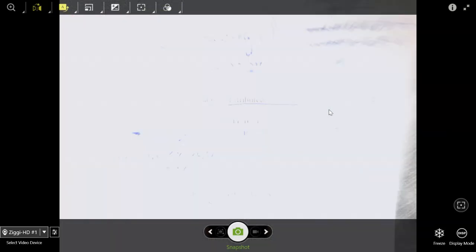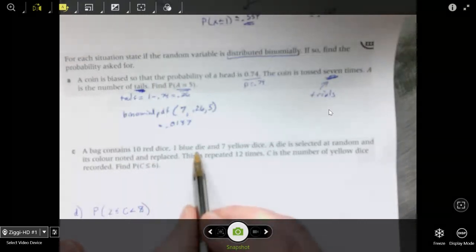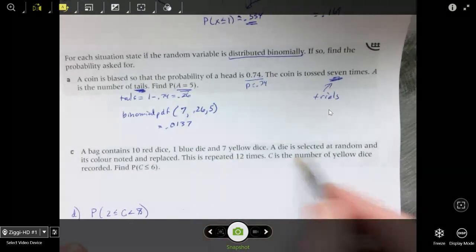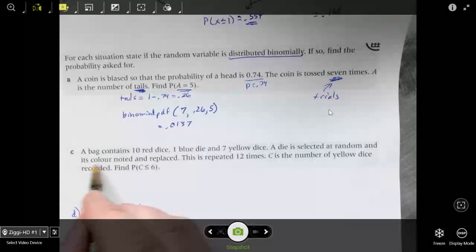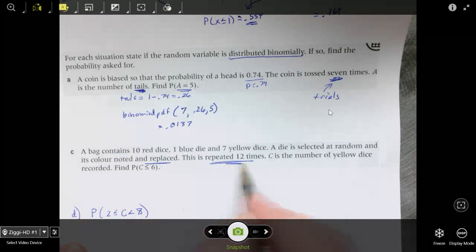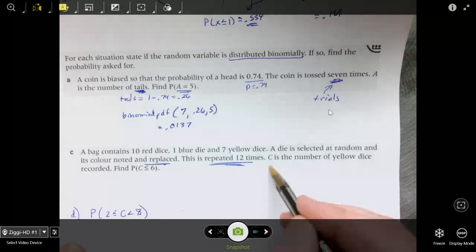And so that's going to be a binomial CDF, cumulative. And we are doing this 12 times. The probability of getting a yellow die, there are 7 of them, so it would be 7 out of 18.